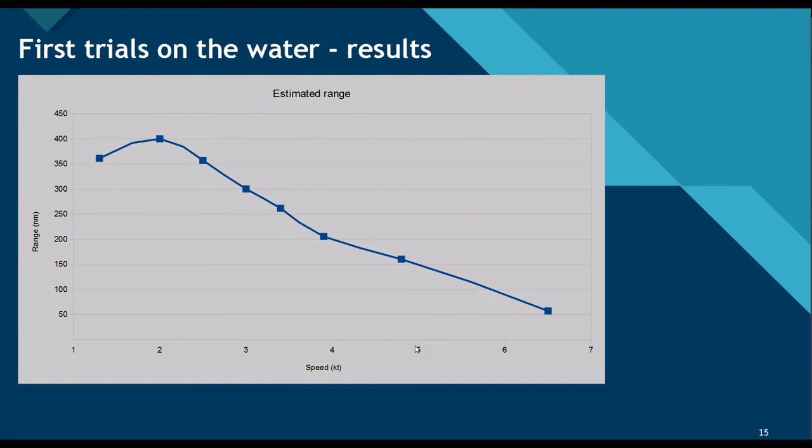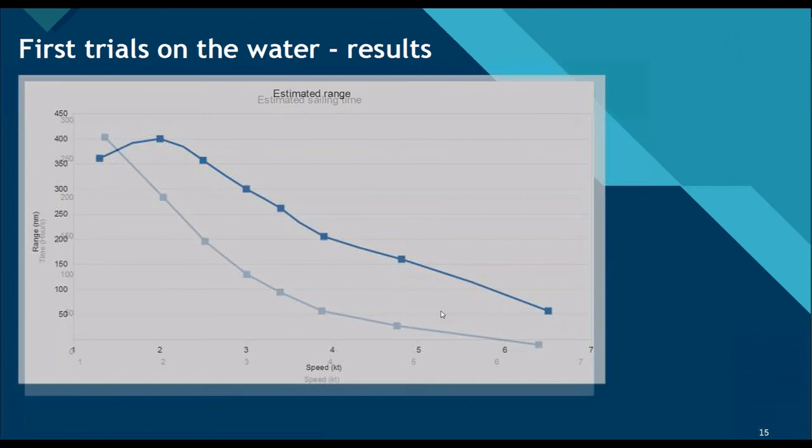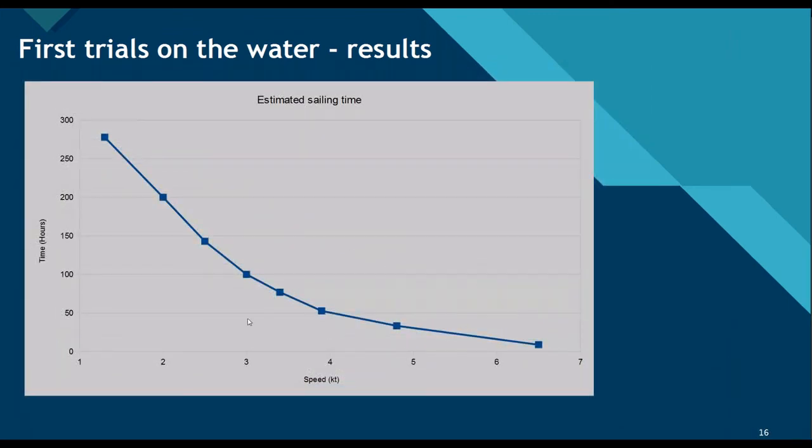It's just theoretical. We did not test it yet in practical. But it looks like if we go something about five knots, we can have range about 150 nautical miles. If we go faster, so this range decreases. And the same with the time. If we go about five knots, we have something about 40 hours of sailing time. This is, I think, more than enough. But as I told, we need to test it in practical. How it's, because this is only estimation.